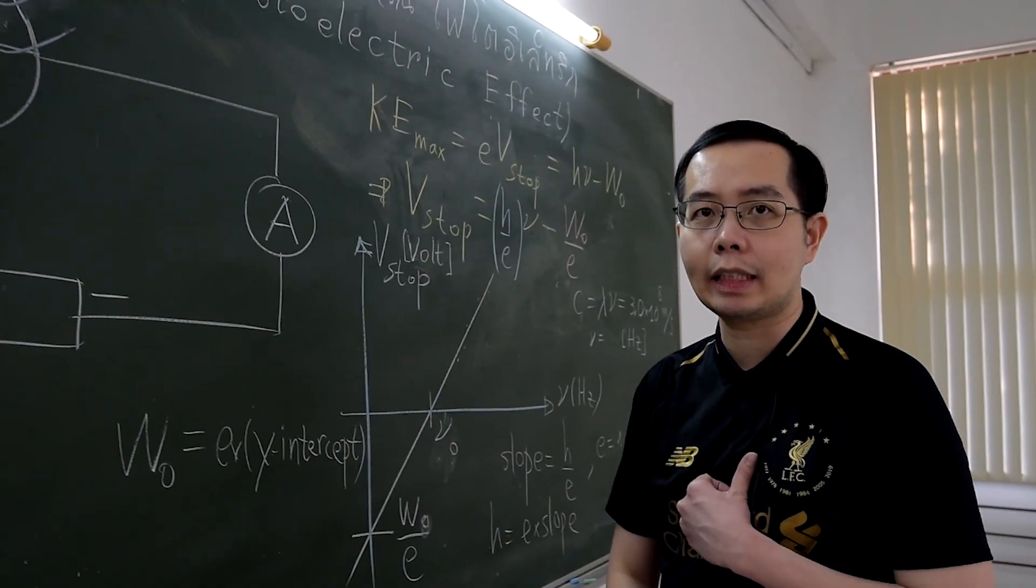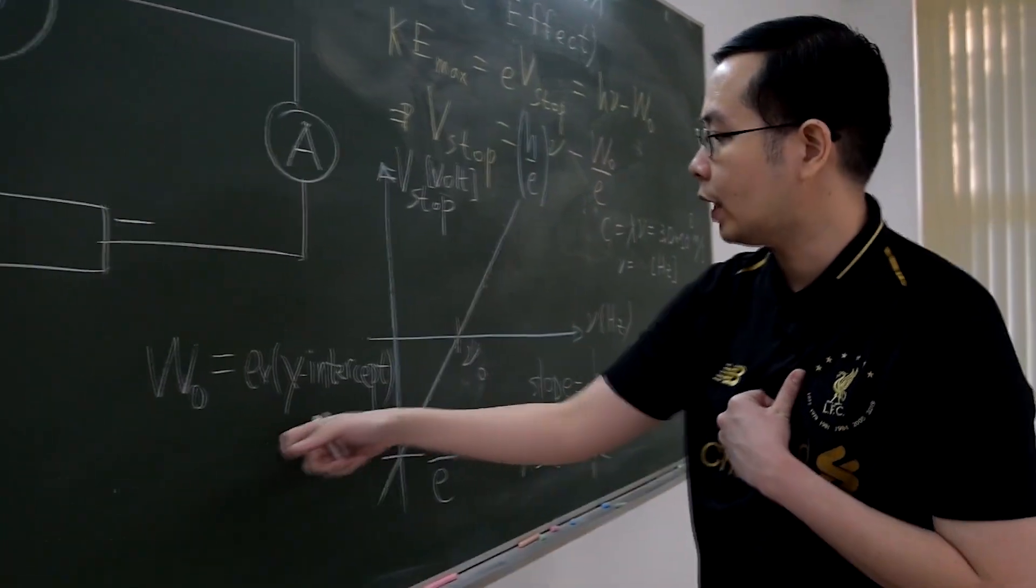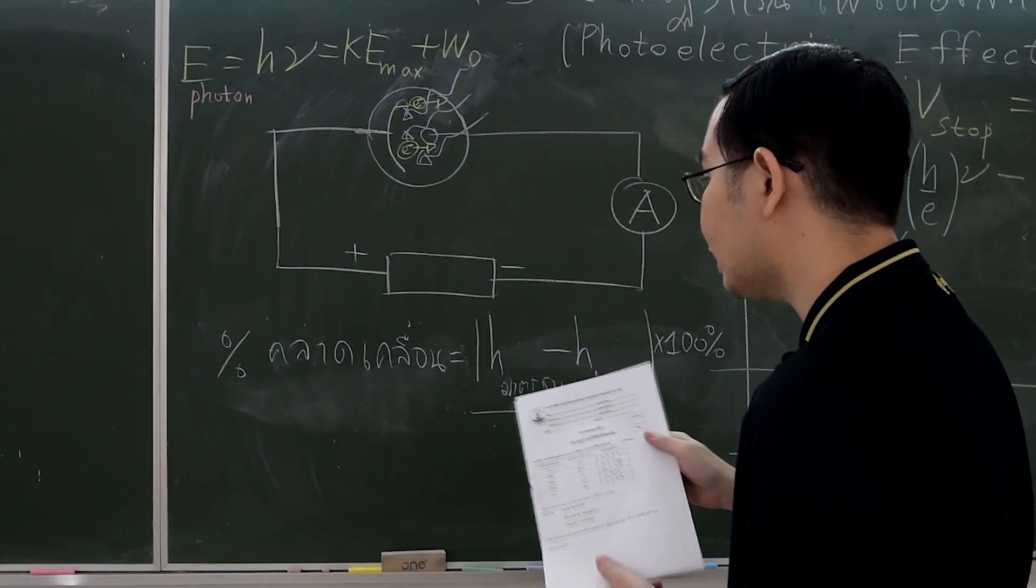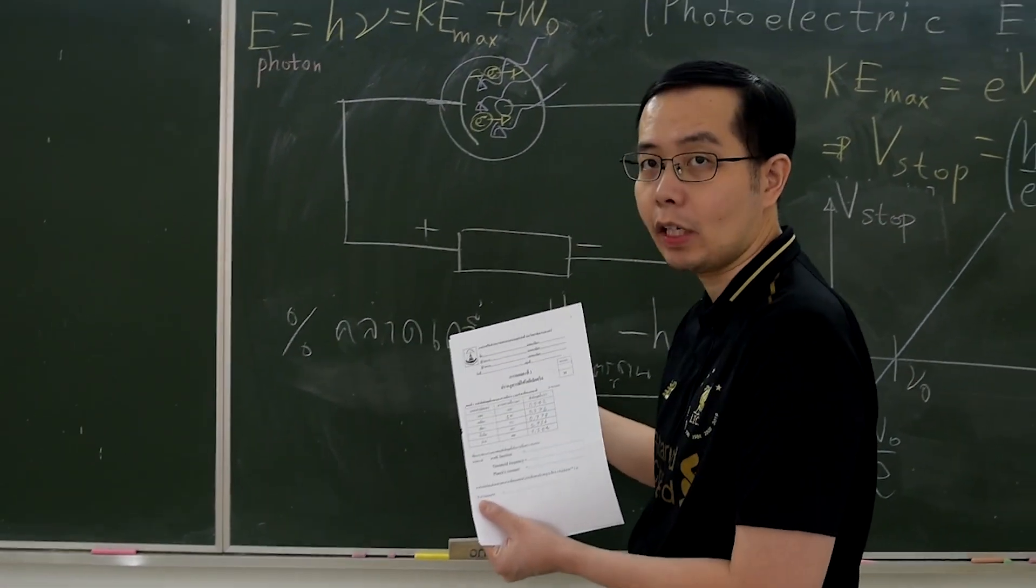So do not shorten the graph axis because we have to use the intercept data. Afterward, find the percentage error from the Planck's constant standard value. Then the first part is finished.